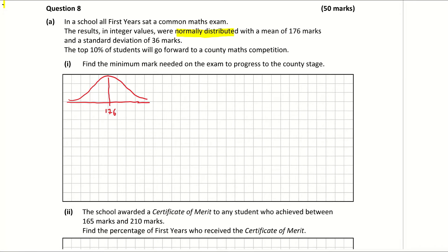It tells us that the top 10% progress to the county stage. So we're basically looking for this percentage that allows these 10% of students to progress. From page 36 in our log tables, we read our percentages from right to left, going this way. So what we're basically looking at here is 90% — 100% take away the 10% that go through, which is marked in green.